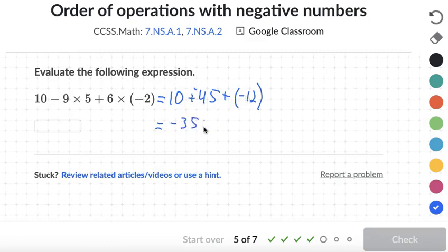And plus negative 12. We have an addition problem. The signs are the same. So we'll go ahead and add. So we have negative 47.